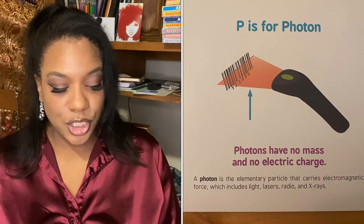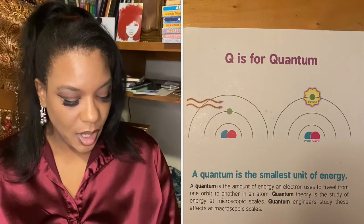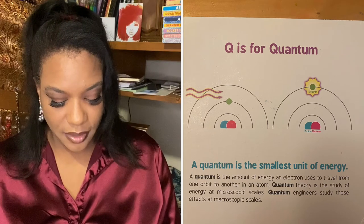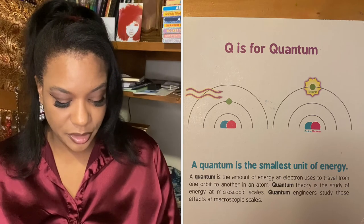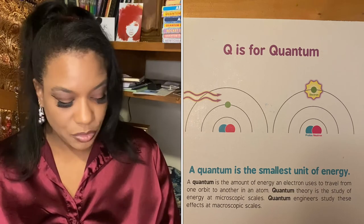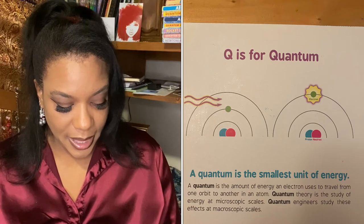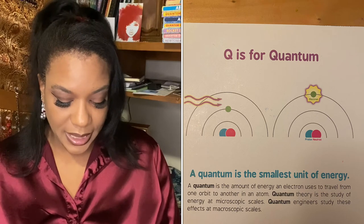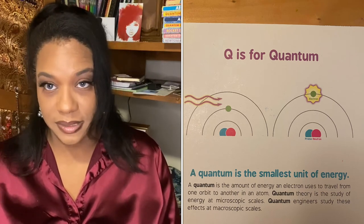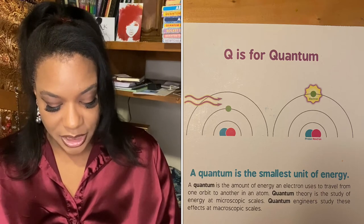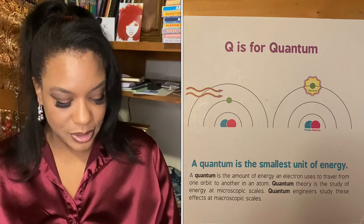Q is for quantum. A quantum is the smallest unit of energy — the amount of energy an electron uses to travel from one orbit to another in an atom. Quantum theory is the study of energy at microscopic scales. Quantum engineers study these effects at macroscopic scales.